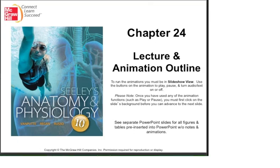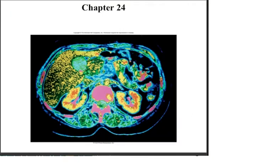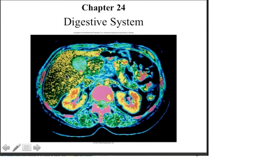Welcome everybody. What we're going to start on this week is a discussion of the digestive system. This is chapter 24, and what you're looking at is a transverse section through the upper abdominal pelvic region. If you look very closely, you can see some of the major structures we'll discuss — you can pick up the liver, a little bit of the stomach, and if you look very closely, you can also see a bit of the esophagus.